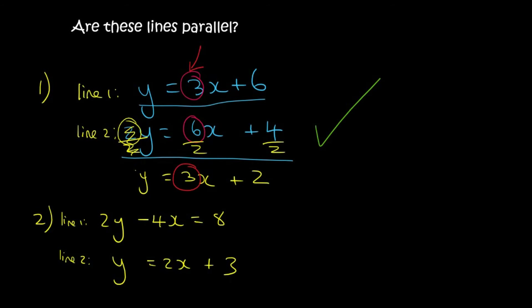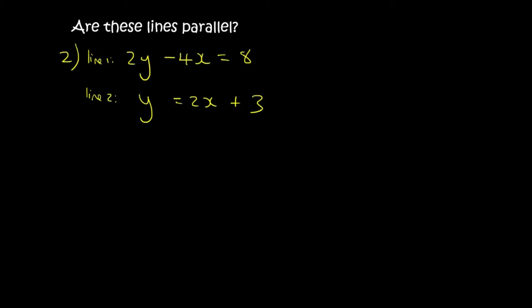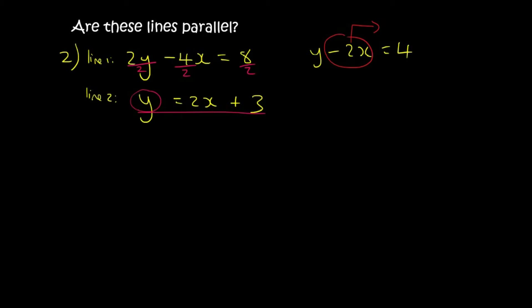Here's number 2. Line number 2 is already in standard form because it has y by itself. But line number 1 is not. So let's change this one by dividing everything by 2, leaving us with y minus 2x equals 4. We then get y by itself, giving us y equals 4 plus 2x. Now that both lines are in standard form we can compare them. The number in front of x is 2 for both lines. So these lines are parallel.